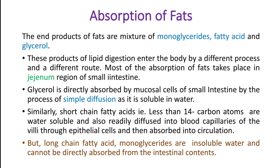Most of the absorption of fats takes place in the jejunum region of the small intestine. Firstly, glycerol is directly absorbed by the mucosal cells of the small intestine by the process of simple diffusion, as it is soluble in water. Similarly, short chain fatty acids which are less than 14 carbon atoms are water soluble and readily diffused into blood capillaries of the villi through epithelial cells and then absorbed into the circulation. Therefore, glycerol and short chain fatty acids are water soluble and they are directly absorbed.